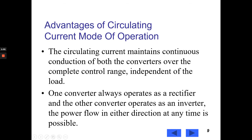Now, we will see advantages of circulating current mode of operation. The circulating current maintains continuous conduction of both the converters over the complete control range independent of the load. One converter always operates as a rectifier and the other converter operates as an inverter.